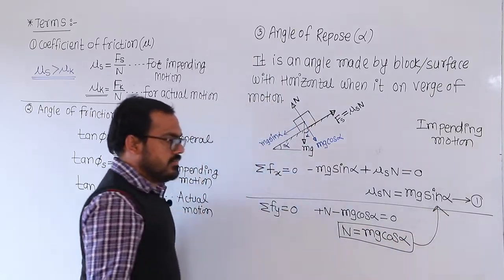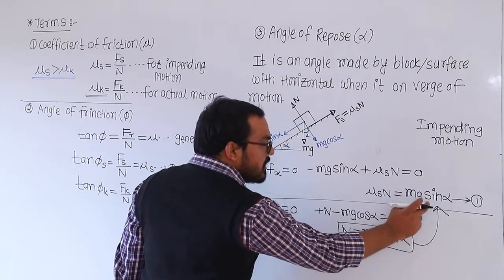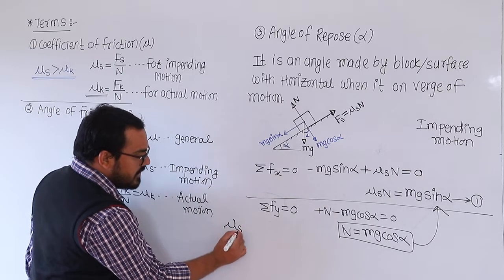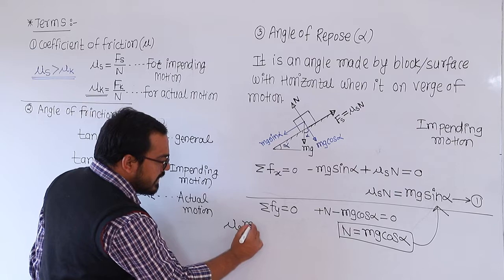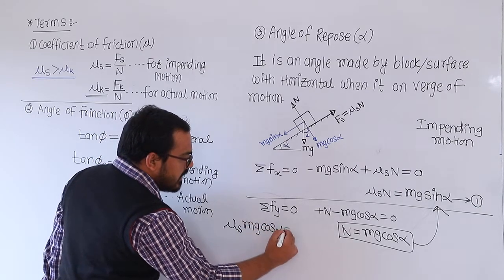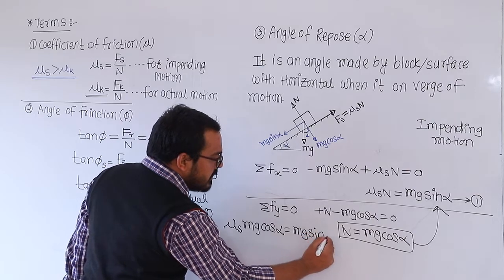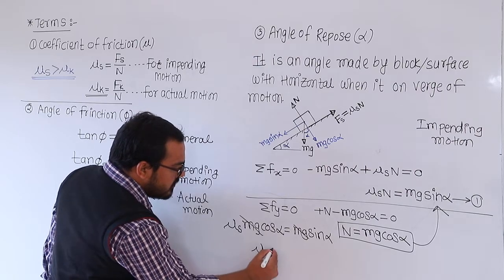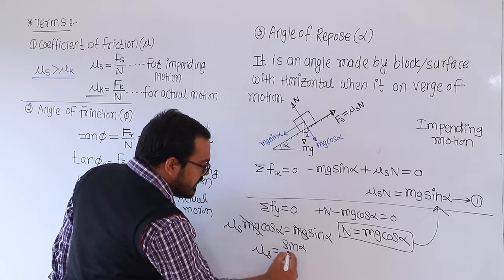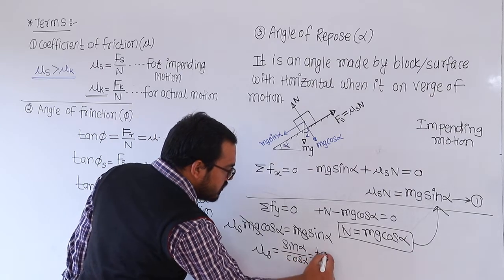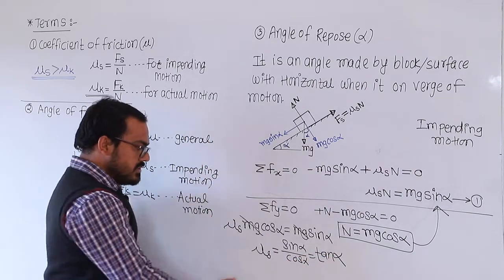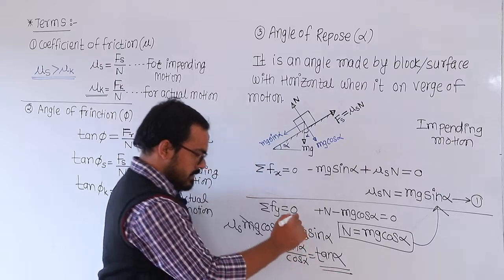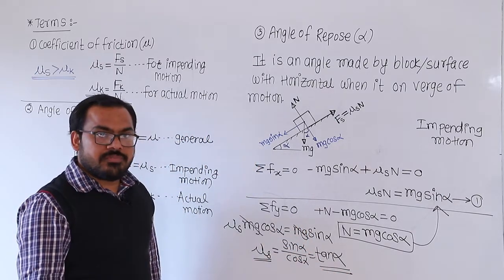Substitute this value into equation number one. So mu_s into mg cos alpha equals mg sin alpha. The mg cancels from both sides. Therefore, mu_s equals sin alpha divided by cos alpha, which equals tan alpha. So this is the relation: mu_s, the coefficient of static friction, equals tan alpha.